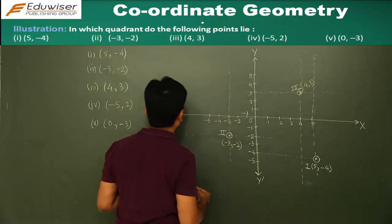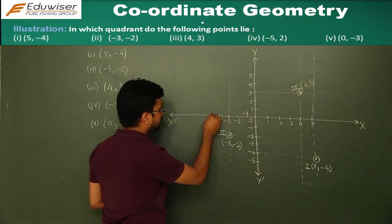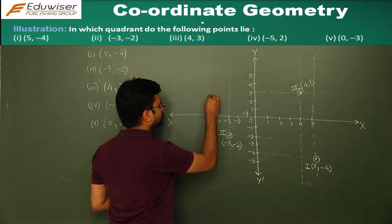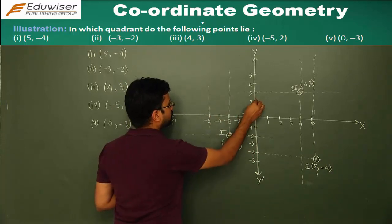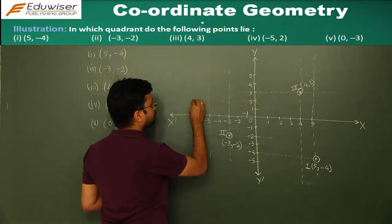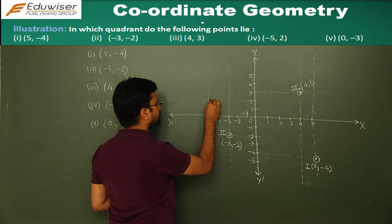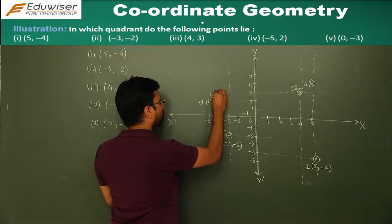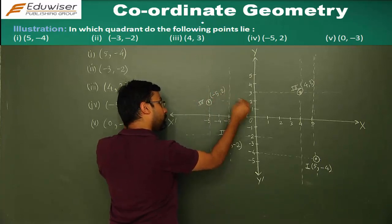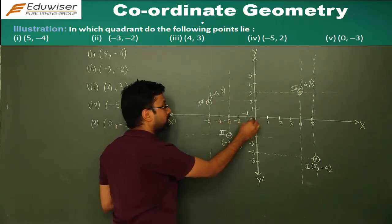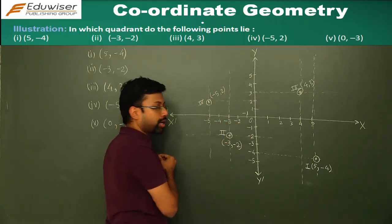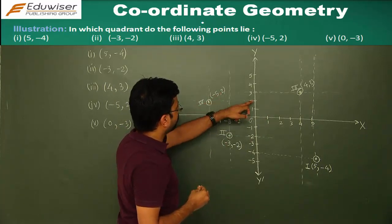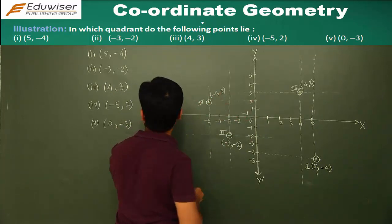The fourth point is (minus 5, 2). You move to minus 5 on this side, draw the line, and 2 along the line parallel to the x-axis. This point gives you (minus 5, 2) — minus 5 is the x-coordinate and 2 is the y-coordinate.